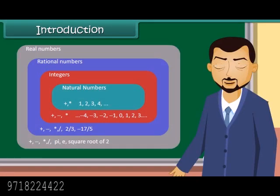We have studied types of numbers such as natural numbers, whole numbers, integers, and rational numbers. In this chapter we will explore numbers in more detail.